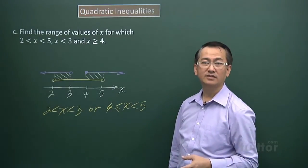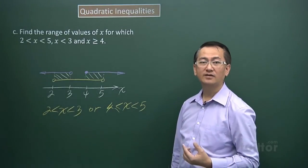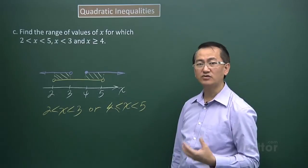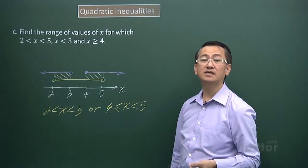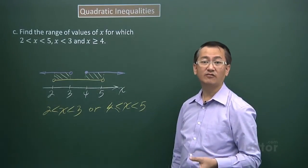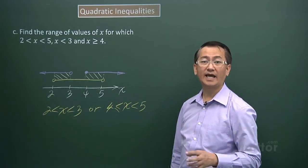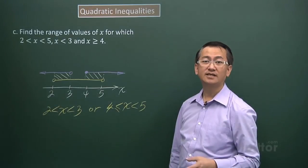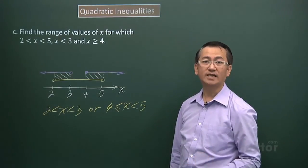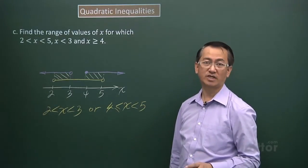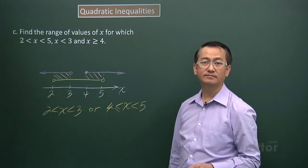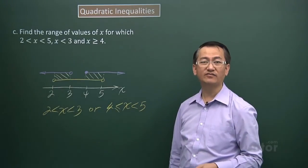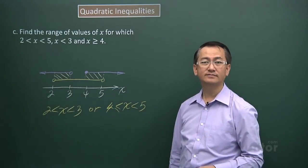The number line method is more versatile than the U-shape or inverted U-shape graph method. That graph method is basically for inequalities involving a quadratic expression. We have now come to the end of this video.